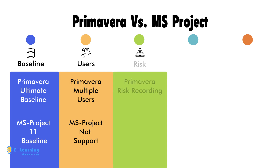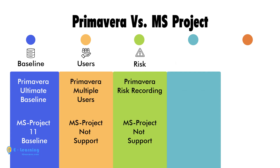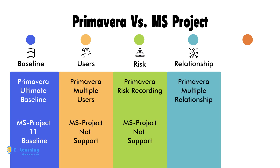Primavera allows risk recording, but MS Project lacks this feature. Primavera also allows multiple activity relationships — in other words, you can create more than one type of relationship between activities.